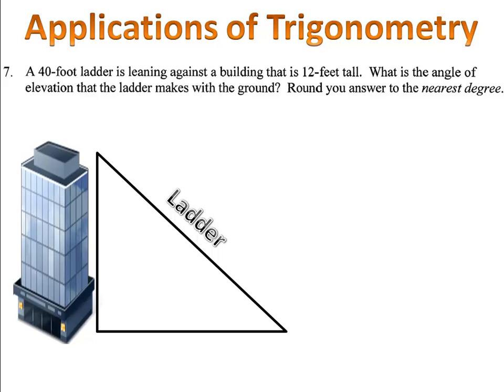Our final example, example seven, is for you to try. We have a 40 foot ladder and it's leaning against a 12 foot tall building. They want to know the angle of elevation that the ladder makes with the ground. Please label the triangle with the sides and the missing angle and then come back and we'll take a look at your work.